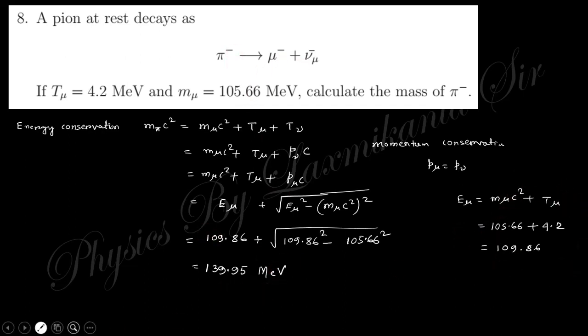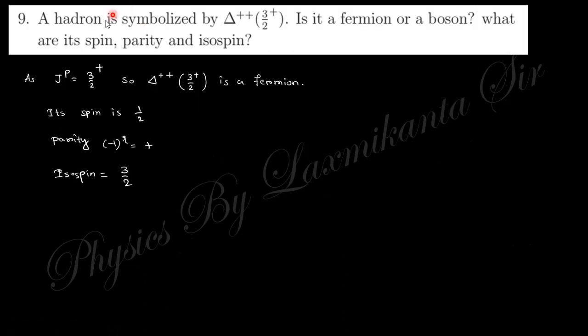Next, a hadron symbolized Δ⁺⁺(3/2⁺), this is the isospin and this is the parity. Is it fermion or boson? You can know that for bosons the spin is an integral multiple, but here it is half integral, so this is fermion. Number, then spin is half, its spin is half and parity is plus, and isospin is 3/2.